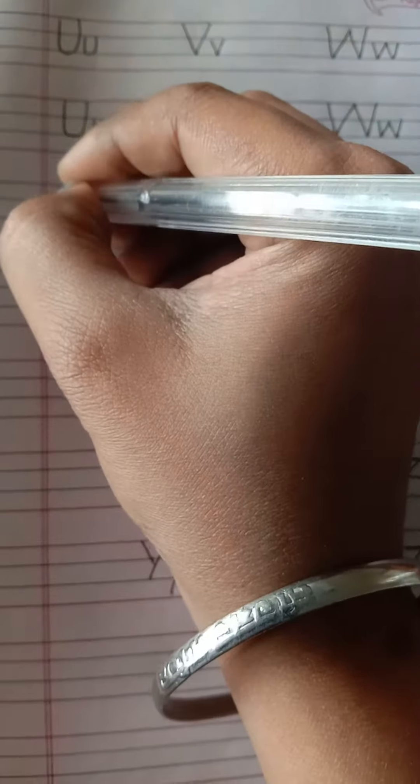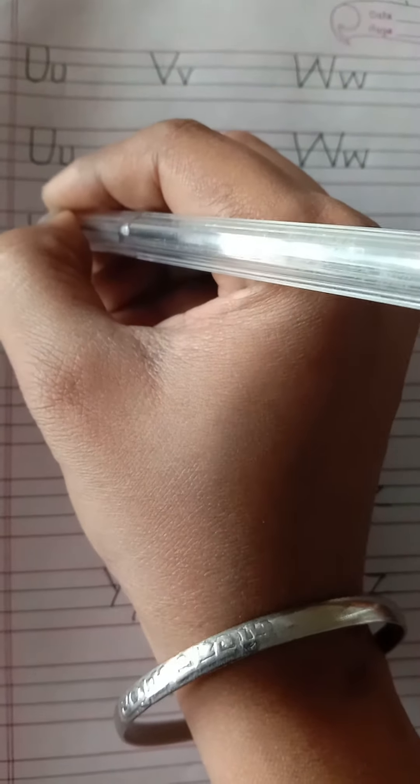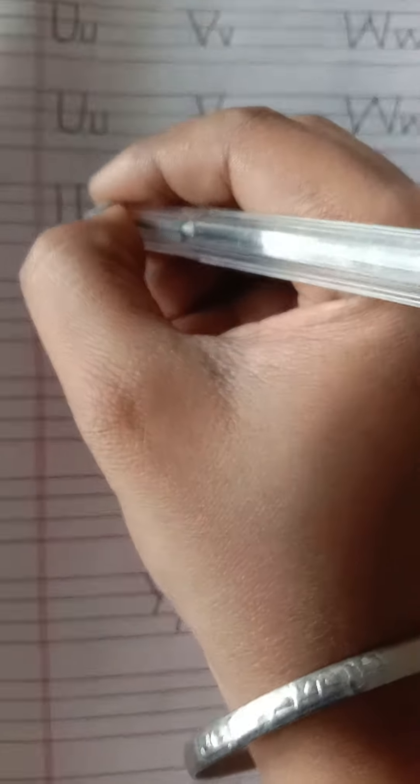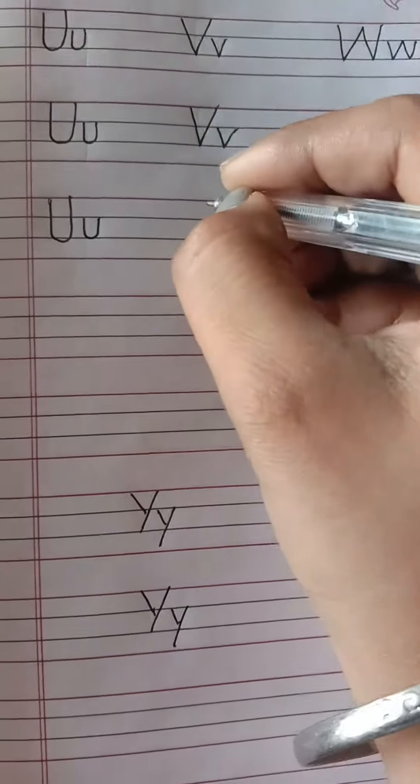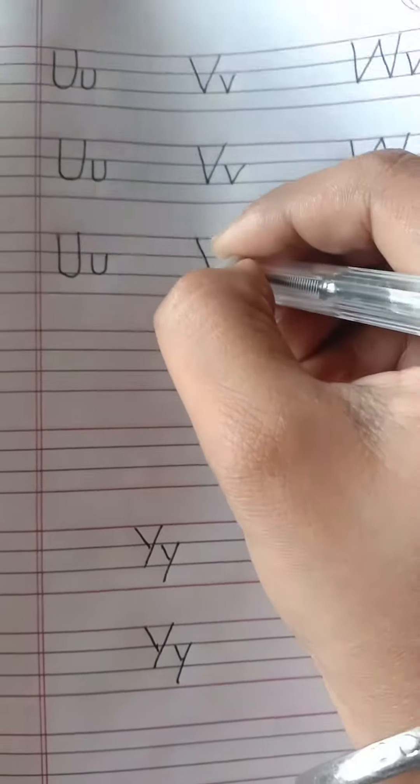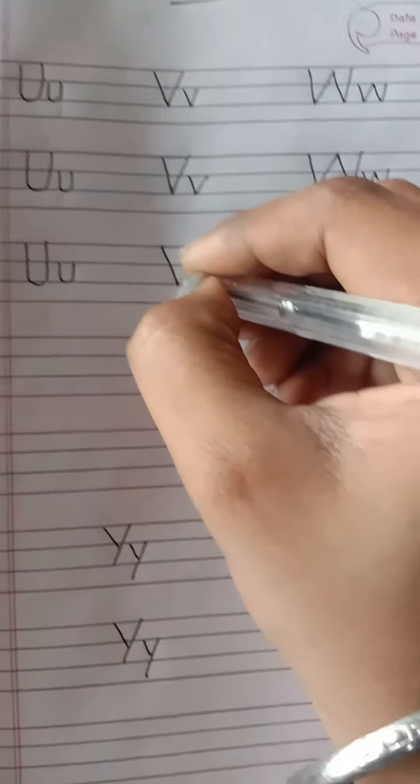U for umbrella. So straight line and curve. Straight and curve and straight. U for umbrella. This is sliding line. Slide. Then slide. V.